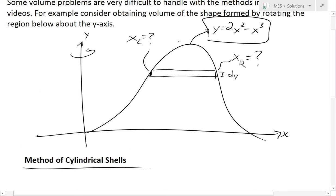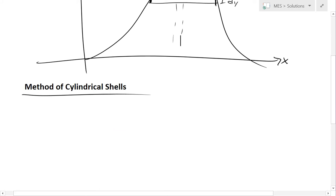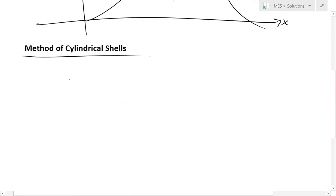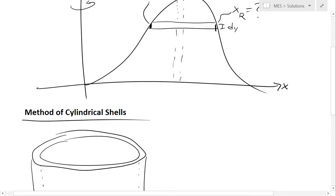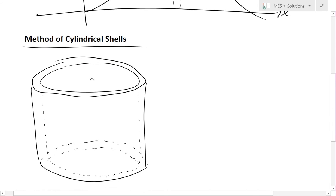Luckily, when dealing with shapes like this, we can use the method of cylindrical shells. Instead of a horizontal section, we use a vertical cross-section and rotate it, getting a cylindrical shell. The shell has an inner radius r1, an outer radius r2, an average radius r at the center, a thickness delta r, and a height h.